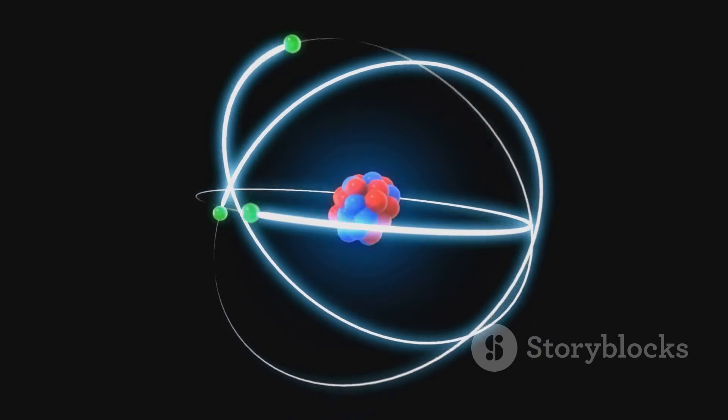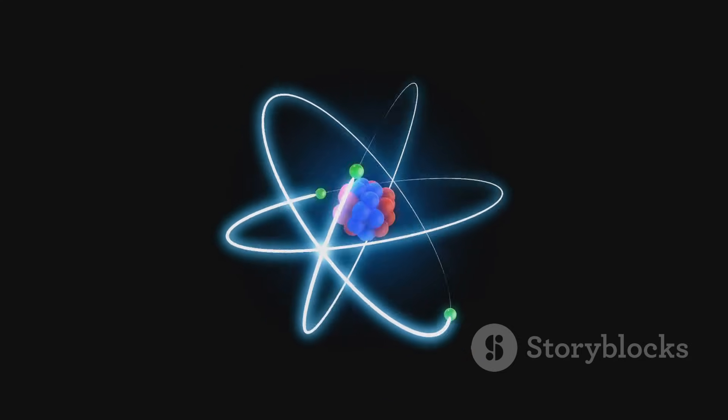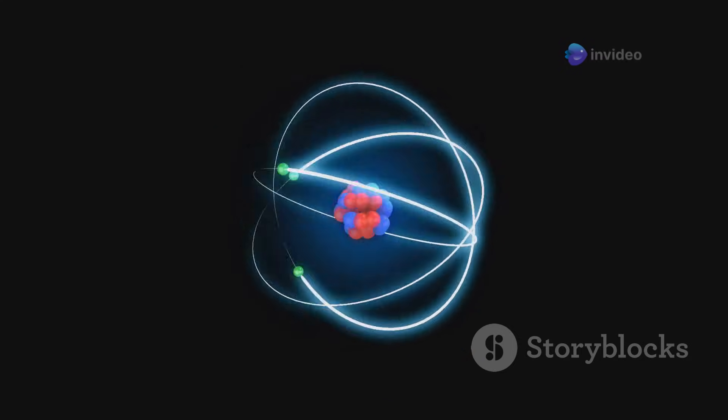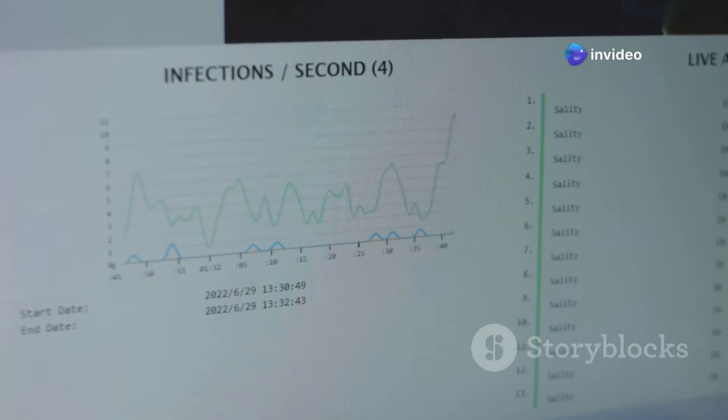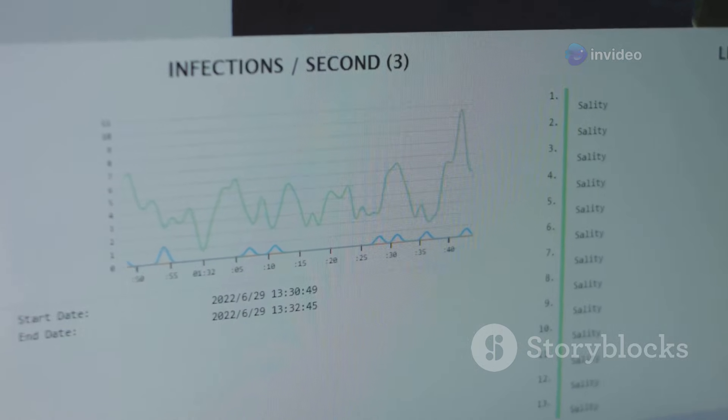Radioactive decay is a natural process where unstable atomic nuclei lose energy by emitting particles. This process is typically described by a half-life, the time it takes for half of the atoms in a sample to decay.